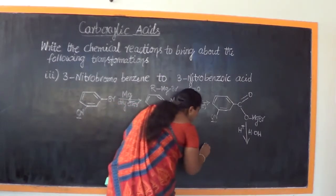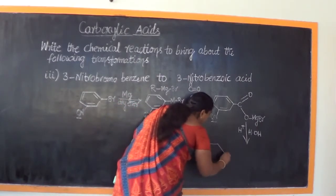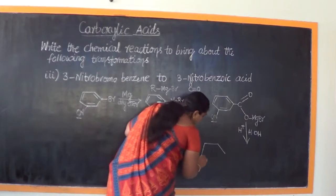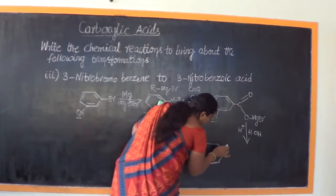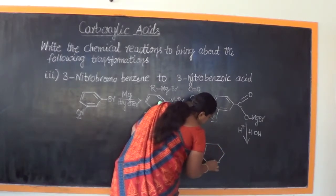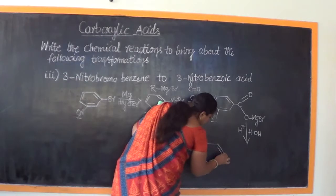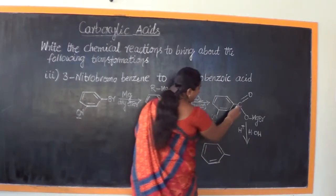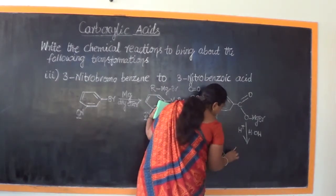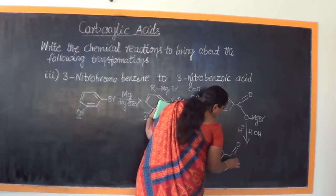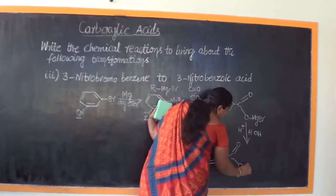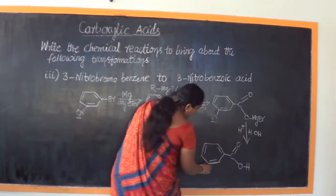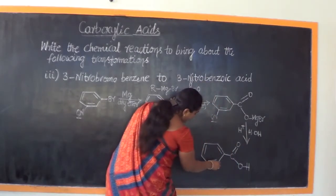Now let us write the final product structure. The benzene ring remains as it is. We have C double bond O, then linked with OH — giving us the carboxylic acid group. The H from the acid hydrolysis takes on attachment to the oxygen.